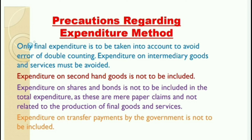Expenditure on raw material will not be included. Second precaution: expenditure on second-hand goods is not to be included because its value is already estimated. Third, expenditure on shares and bonds is not to be included in the total expenditure as these are mere paper claims and not related to the production of final goods and services.